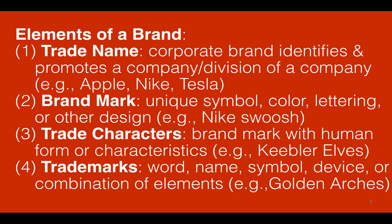There are various elements of a brand — it's not just one singular thing. A trade name is how the corporate brand identifies and promotes a company or a division of a company. Examples include Apple, Nike, or Tesla. A brand mark is a unique symbol, color, lettering, or other design used for the brand, such as the Nike swoosh.